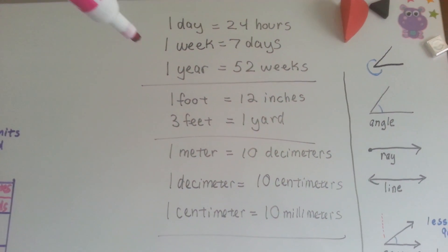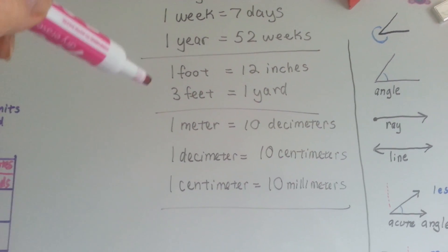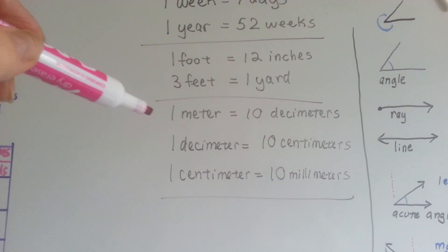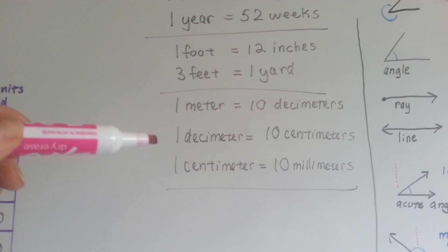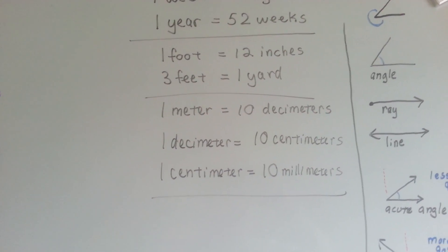One day is 24 hours. One week is 7 days. One year is 52 weeks. One foot is 12 inches. Three feet is a yard. One meter is 10 decimeters. One decimeter is 10 centimeters. And one centimeter is 10 millimeters.